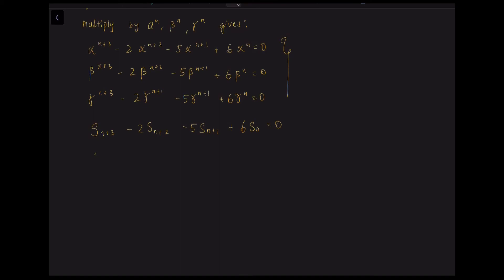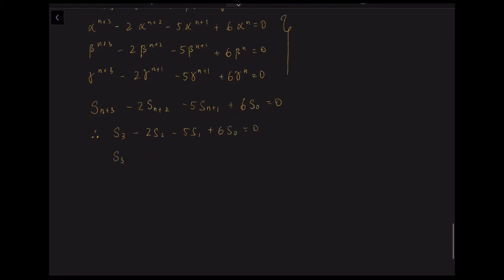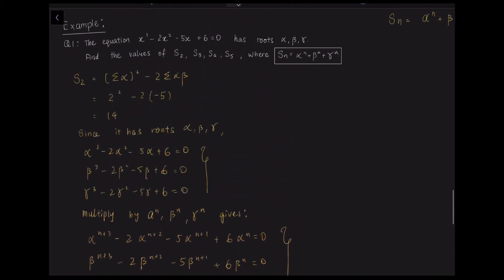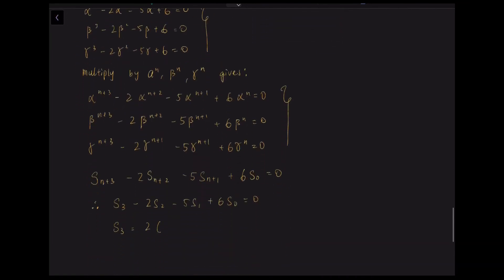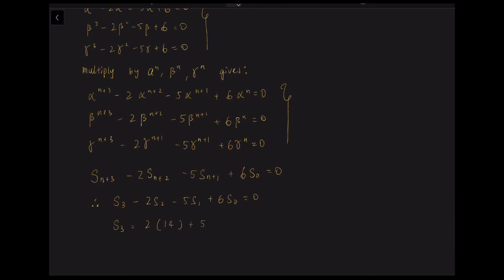With this recurrence we can solve for any power sum. For S₃, we let n=0: S₃ − 2S₂ − 5S₁ + 6S₀ = 0. Substituting S₂=14, S₁=2, and S₀=3 (since 1+1+1=3), we rearrange to get S₃ = 20.